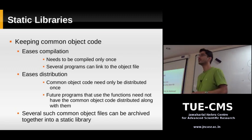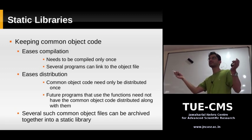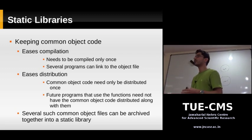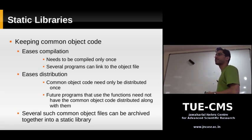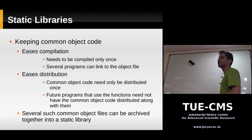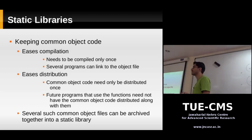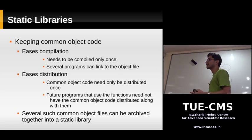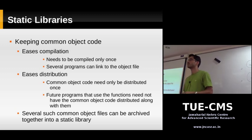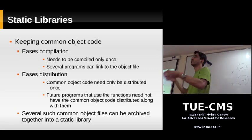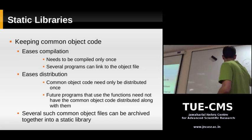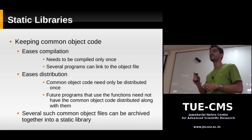The other advantage is easing distribution. Suppose you create some special math functions and distribute them over the internet — people download them. Whenever you distribute a new program which uses these functions, you do not need to include the functions again. You just distribute your program because people already have your functions and the object file. You just need to send the object file of your main program. If you have several object files, you can bunch them together into a single file — we call that a static library, with a .a extension.